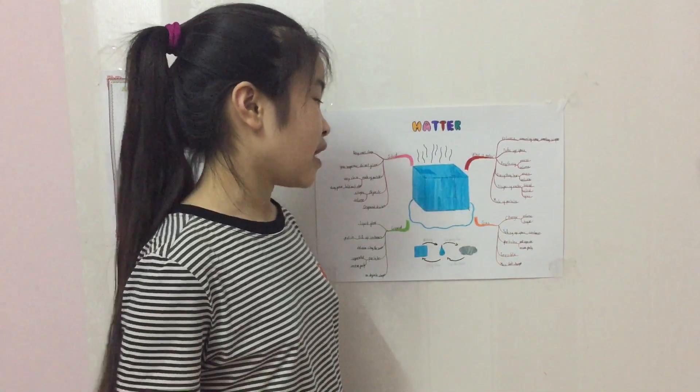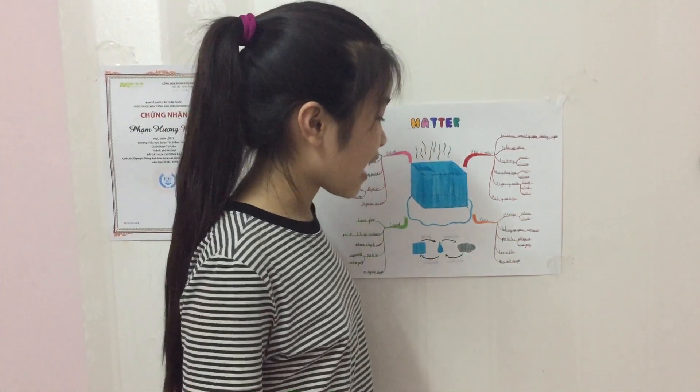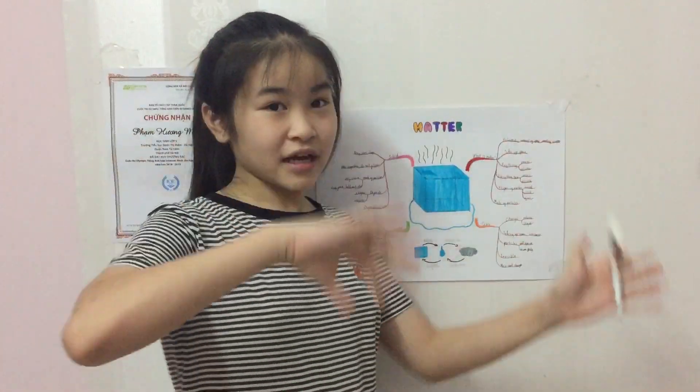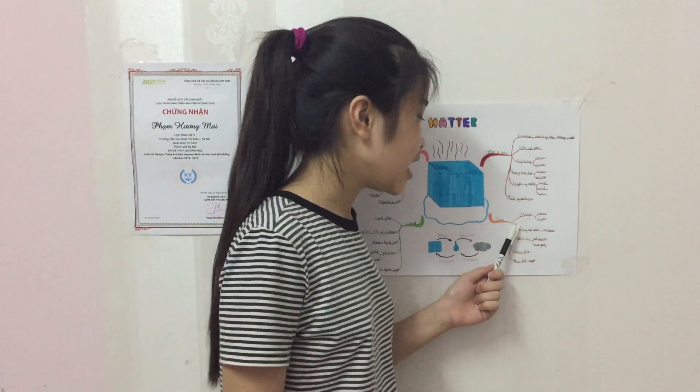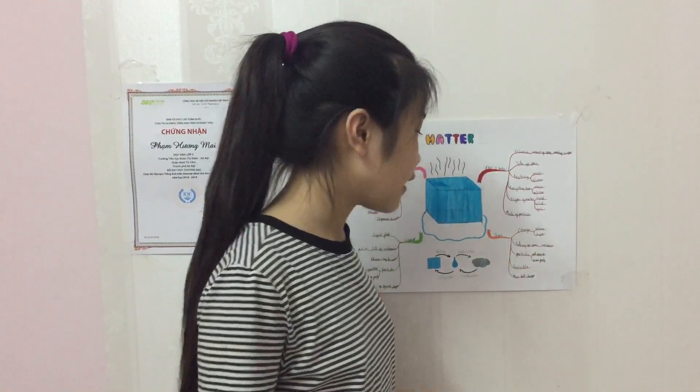First of all, we have gas. Gas is like the air around us. When you are breathing in, that's gas. You cannot see it because it is invisible, but it still takes up space. It can change in volume and shape, because wherever you put it — in any room or any container — it just fits that.